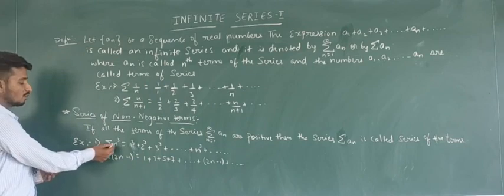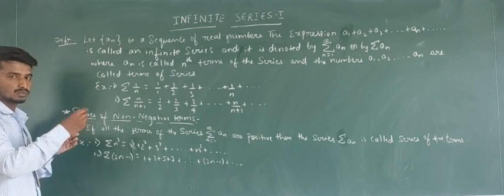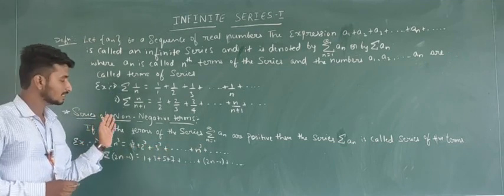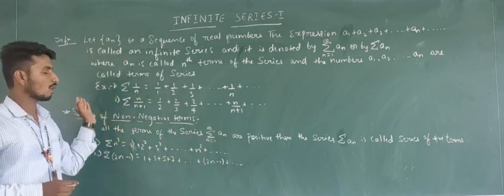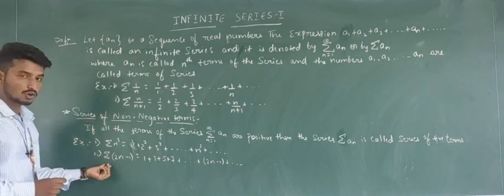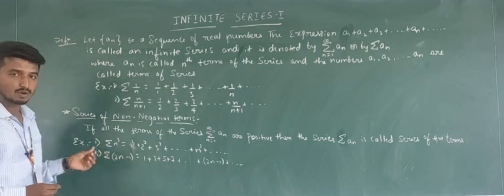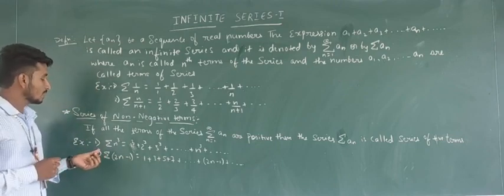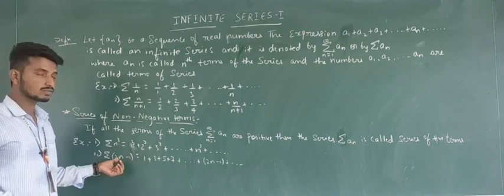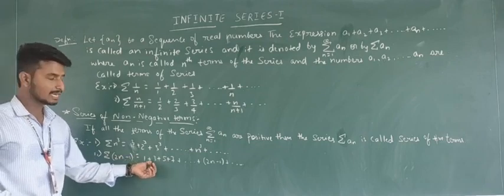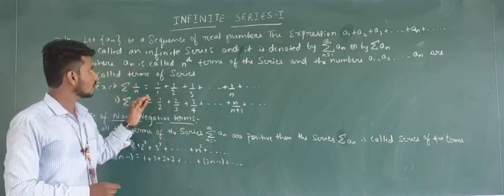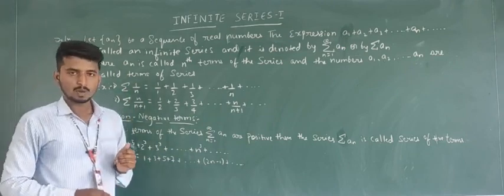For example, if we take the summation of n³, substituting values 1, 2, 3, we get 1³ + 2³ + 3³ + ... + n³ + ..., and here all terms are always positive. Another example is the summation of (2n − 1). Substituting n = 1 gives 2(1) − 1 = 1; substituting n = 2 gives 2(2) − 1 = 3; and so on, giving 1 + 3 + 5 + 7 + ... + (2n−1) + ..., which is also a positive series.